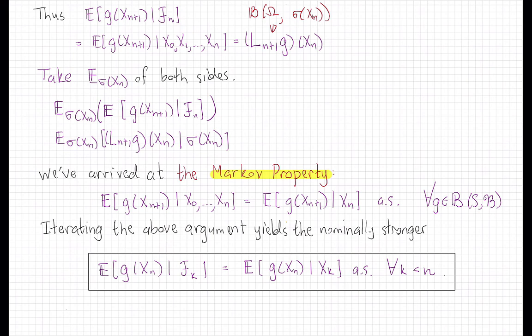But what happens if I condition this on the sigma field generated by X_n? Well, let's just check. What's the conditional expectation given X_n of this? Well, sigma(X_n) is a sub-sigma field of F_n, which is the sigma field generated by X_n and some other stuff. So by the tower property of conditional expectation, that's just the conditional expectation of g(X_{n+1}) given X_n alone, almost surely.